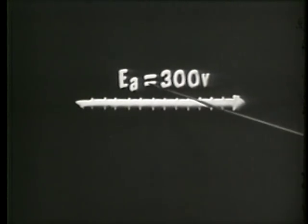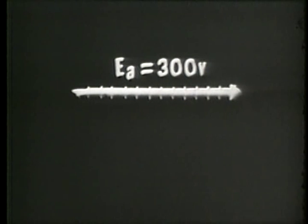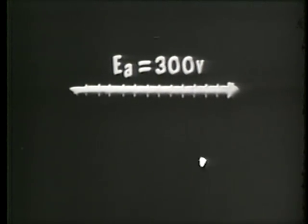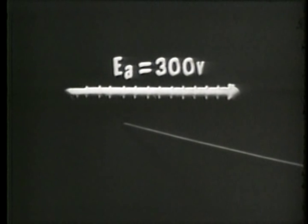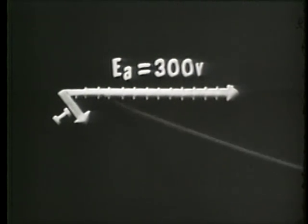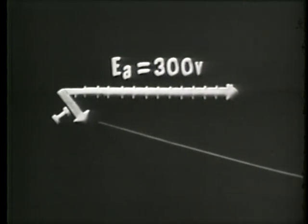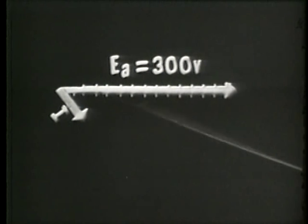Before we go ahead with the vector diagram, recall that when we constructed our impedance vectors, the impedance angle was a positive 53 degrees. The phase angle in a reactive circuit is the same as the impedance angle except the sign is opposite — so it would be a negative 53 degrees. We know we have an inductive circuit so there will be a current lag. The current of 20 milliamps would therefore be plotted lagging the applied voltage by 53 degrees, at a negative 53 degree angle.